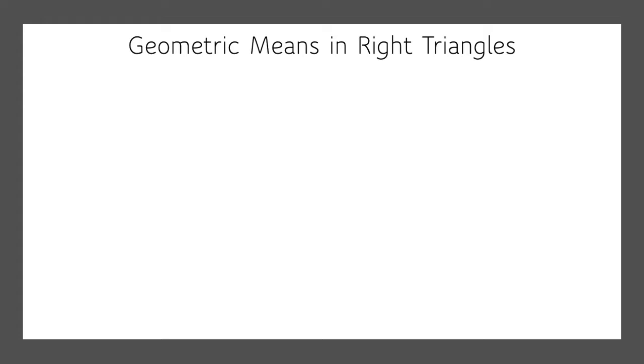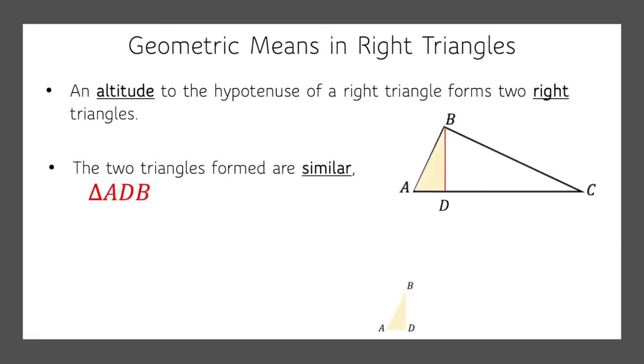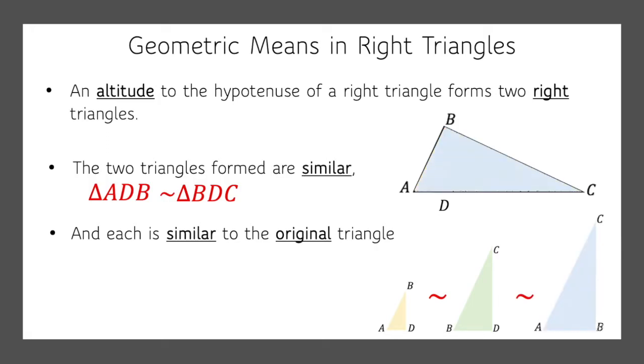Now let's talk about geometric means in right triangles. So an altitude to the hypotenuse of a right triangle forms two right triangles. Okay, here's a right triangle and if I draw its altitude, take the vertex straight down to the hypotenuse, I get two right triangles. And these two right triangles are similar. So this little guy, ADB, is similar to the big guy, BDC. And both of those are similar to the original triangle of ABC.